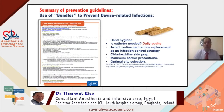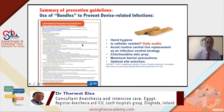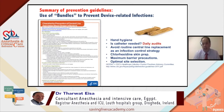In summary of prevention guidelines, the approach used in most units is bundles. The CDC checklist covers proper insertion practice, handling and maintaining central lines, and healthcare organization guidance. The core bundle includes hand hygiene, daily audit for catheter necessity — asking 'do I still need this catheter?' — and avoiding routine central line replacement as an infection control strategy.